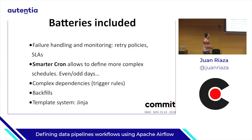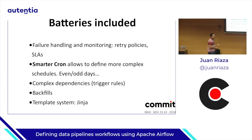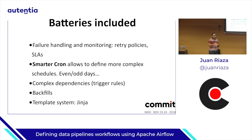Airflow has batteries included for failure handling and monitoring. We have retry policies with backoff times between retries — imagine a system is down, we could wait 3 seconds, then 6 seconds, and so on. We also have service level agreements: we can set an SLA for a DAG and get an alert if it breaches that SLA.